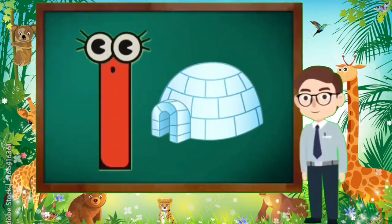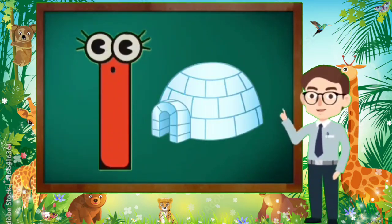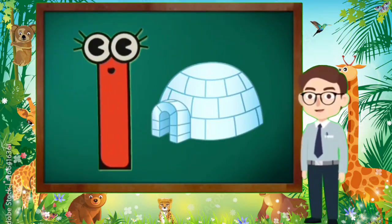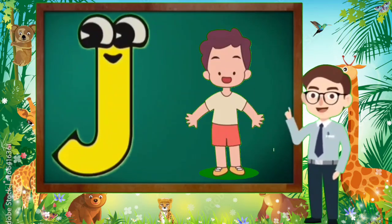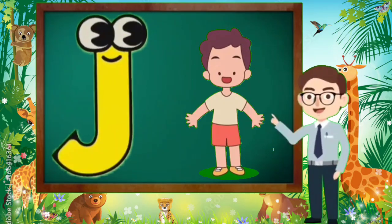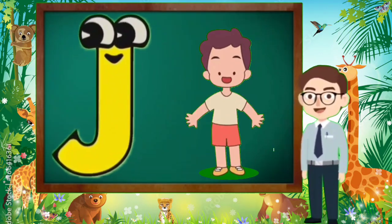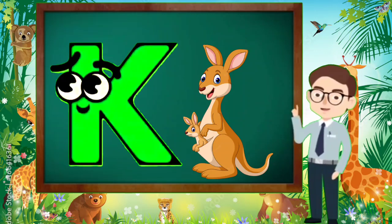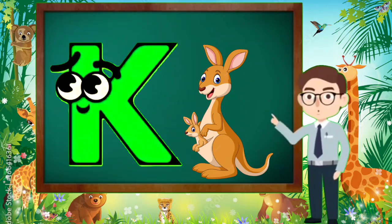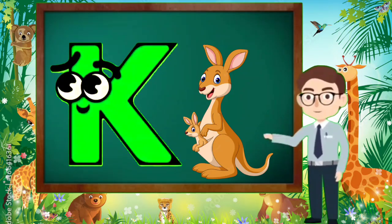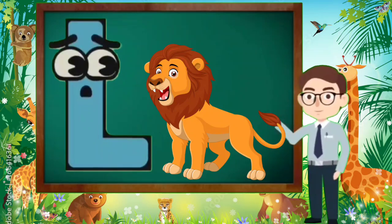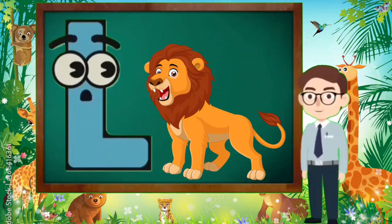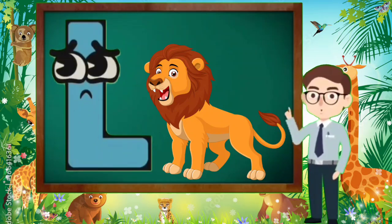I is for Igloo, I-I-Igloo. J is for Jump, J-J-Jump. K is for Kangaroo, K-K-Kangaroo. L is for Lion, L-L-Lion.